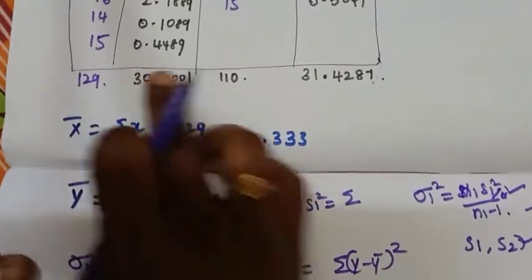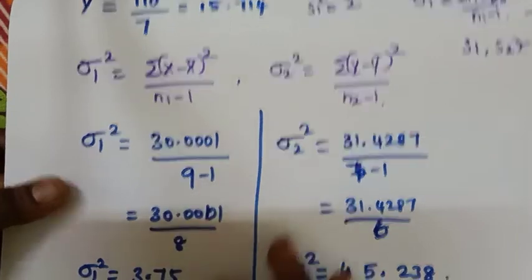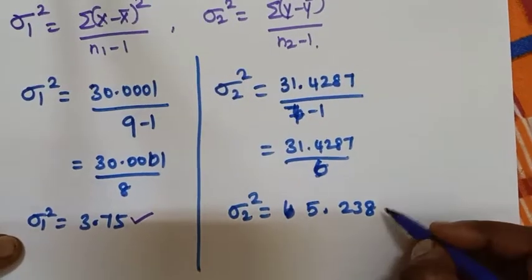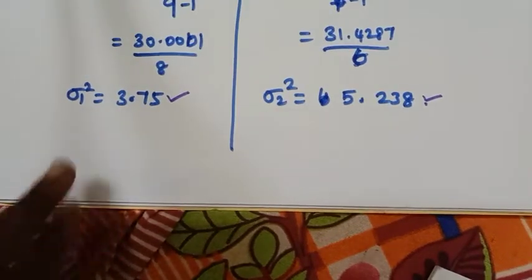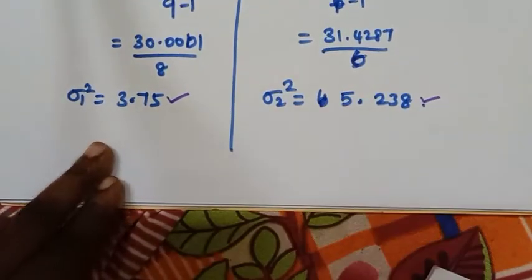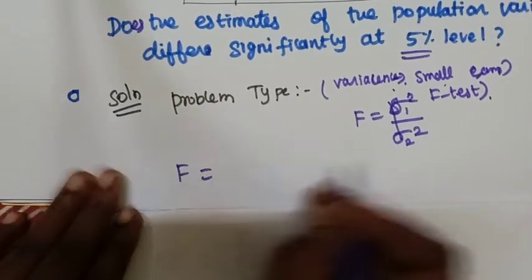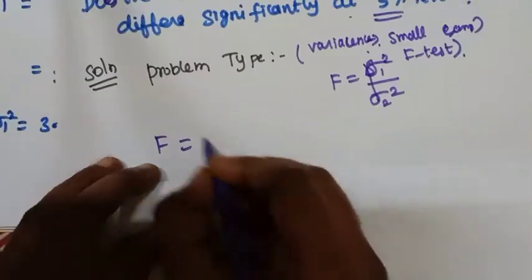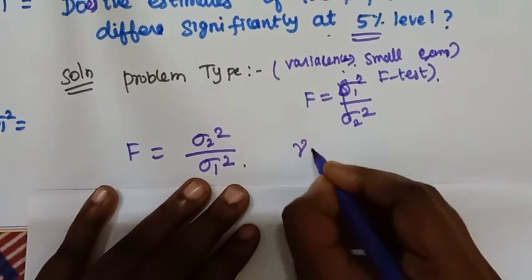Just substitute our values. n1 minus 1: this sample size is 9, so 9 minus 1 is 8. Sigma1 squared equals 5.23. So now we have the calculation. We have sigma1 and sigma2 — sigma2 is larger. So now we will rewrite the formula: therefore F equals the larger variance, 5.23 (sigma2 squared), divided by sigma1 squared.